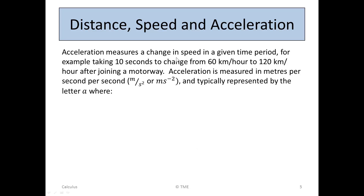Acceleration measures a change in speed in a given time period — for example, taking 10 seconds to change from travelling at 60 km/h to 120 km/h after joining a motorway. Acceleration is measured in meters per second per second, written as m/s² or ms⁻², and typically represented by the letter a. Here a is the rate of change of velocity in time — dv/dt, or v′, or the second derivative of distance d²s/dt², or s″.